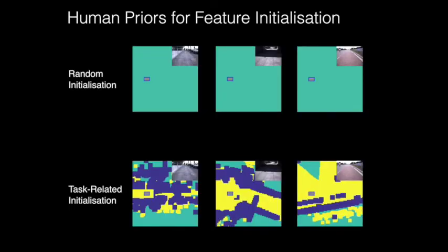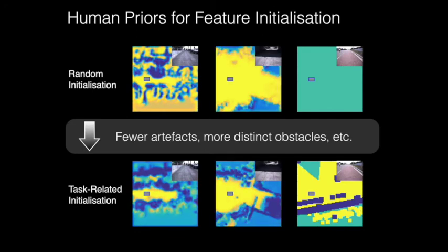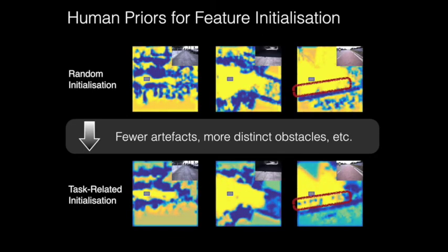By injecting human priors into the training process, we achieve fewer artifacts, present more distinct obstacle boundaries, and in some cases identify obstacles that were not captured with just random network initialization.